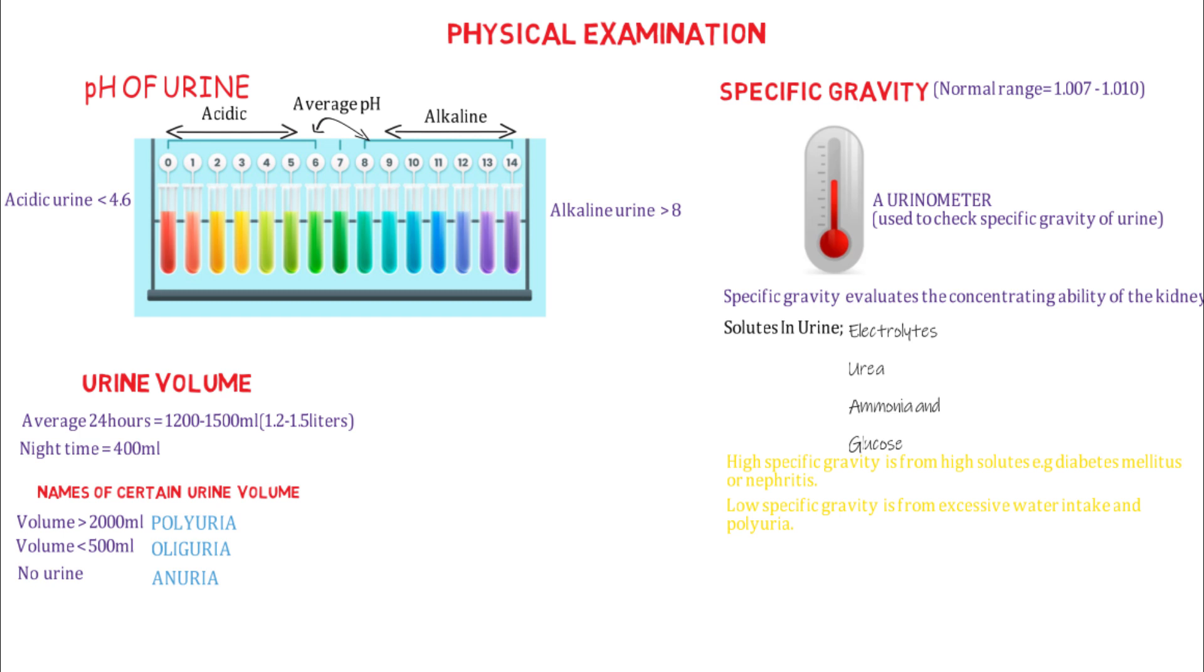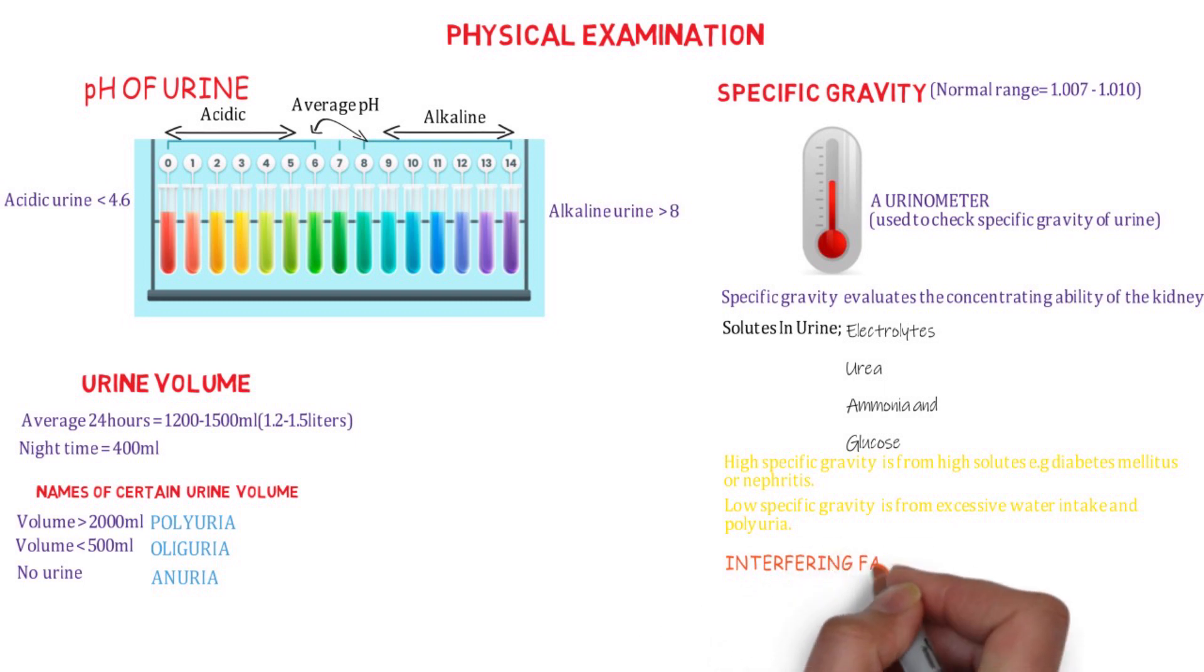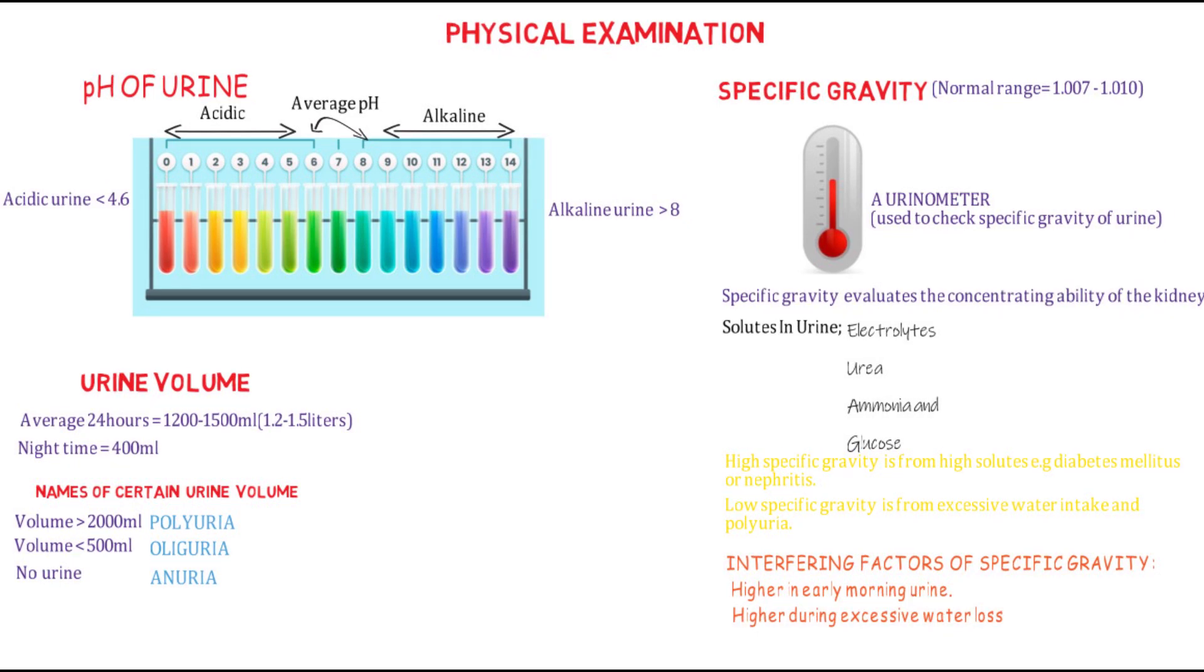There are different interfering factors of specific gravity. It's usually higher in early morning urine sample, that's the first urine when you wake up, and whenever there is an excessive loss of water, especially during hot weather or in a hot environment.